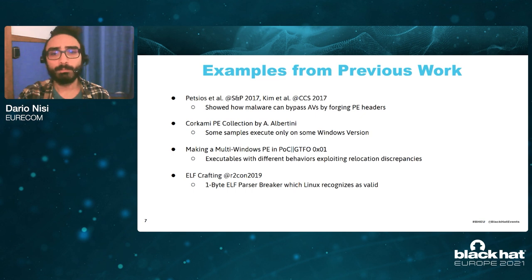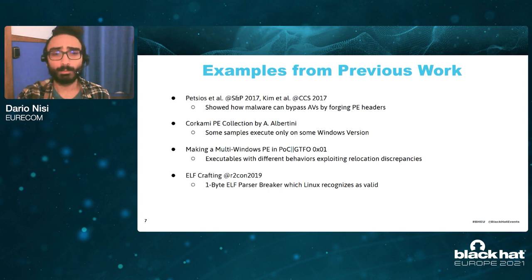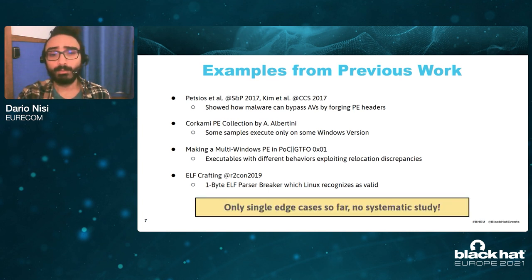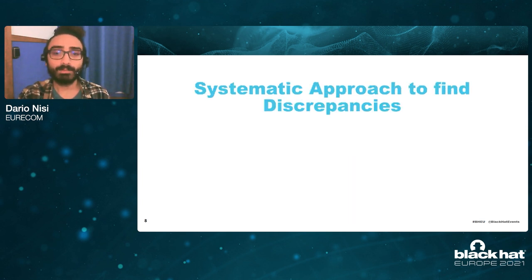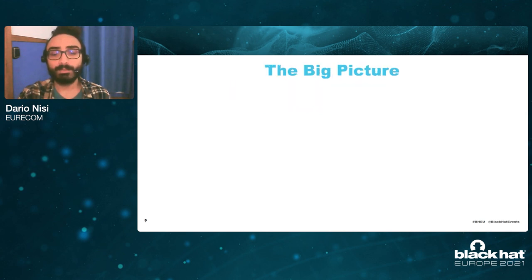Our work is by no means the first one to tackle the problem of PE discrepancies. But all these other works that have been published or conducted before only scratched the surface of the problem in our opinion. They only documented single edge cases and nobody really did a systematic study of this problem. That's exactly what we did in our work — we provide a systematic approach to find discrepancies in the PE ecosystem.